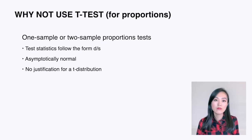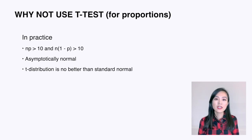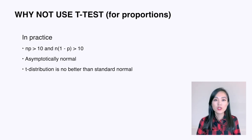The typical one-sample and two-sample proportions tests are in this form, so we have some justification for treating them as asymptotically normal, but we don't have any justification to consider them as following a t-distribution. In practice, as long as np and n(1-p) are not too small — specifically when both are larger than 10 — the asymptotic normality of the proportions test comes in rapidly. So theoretically we don't use a t-test to test proportions, and there's no good argument that the t-distribution should be better than the z-distribution.